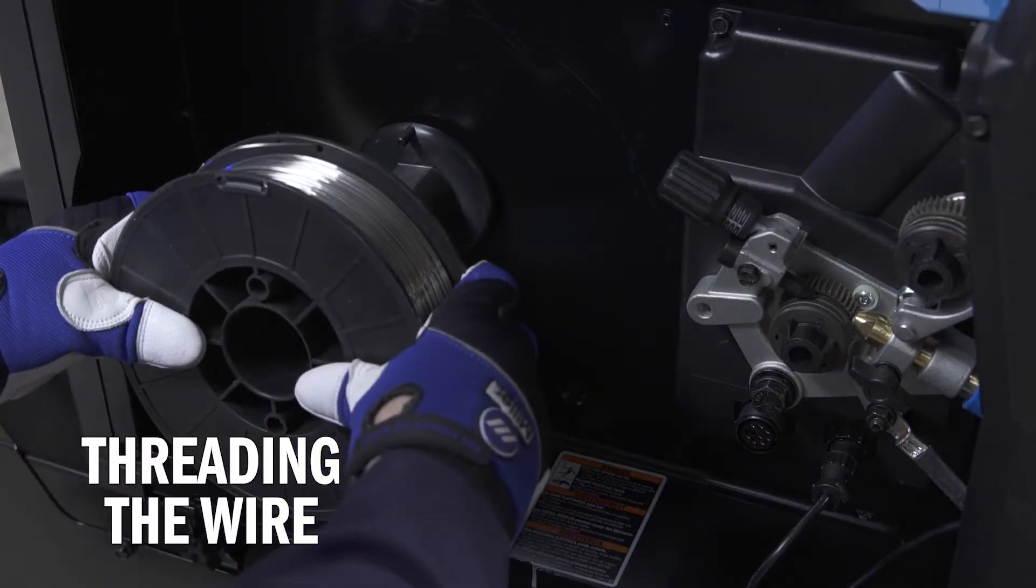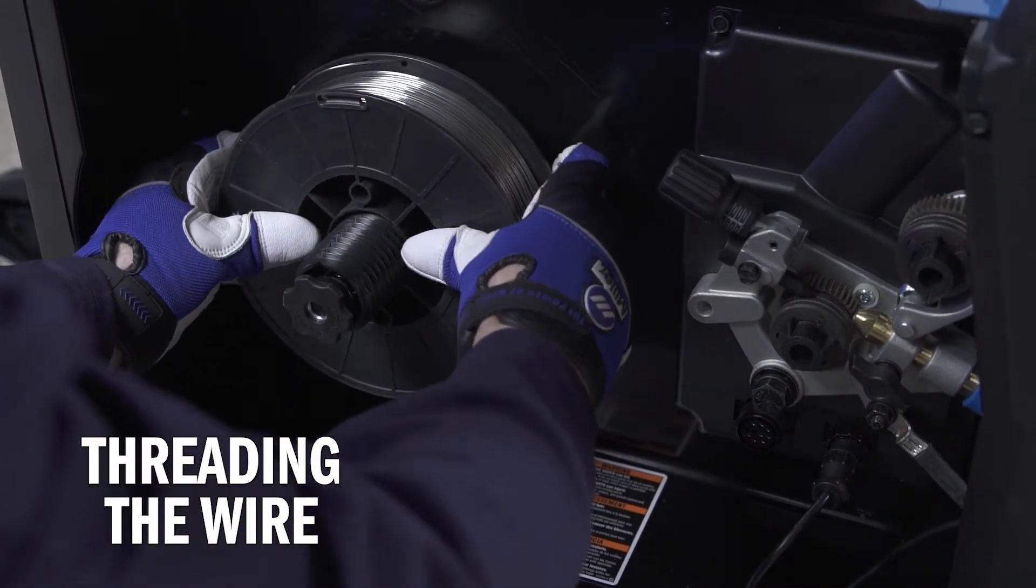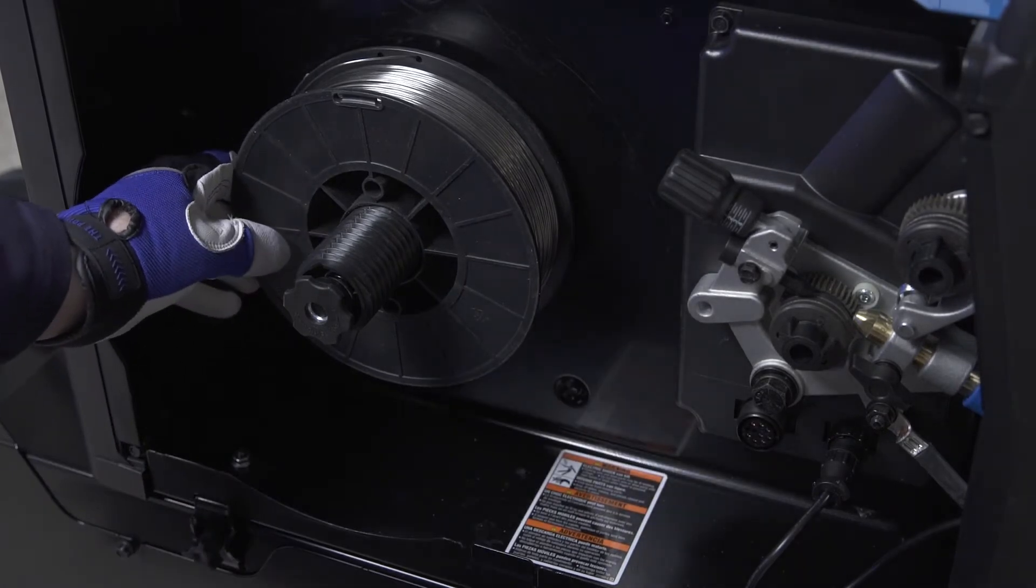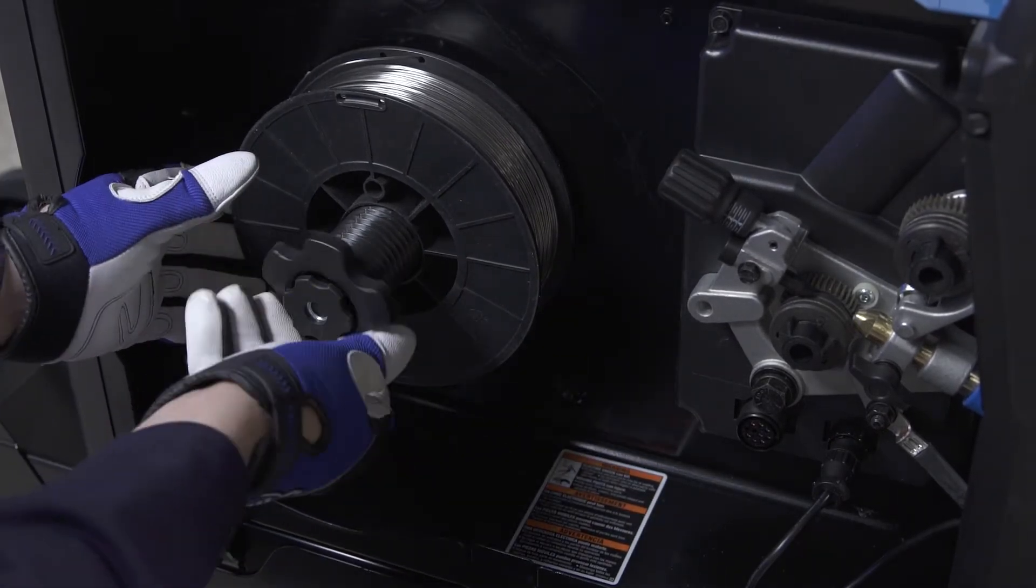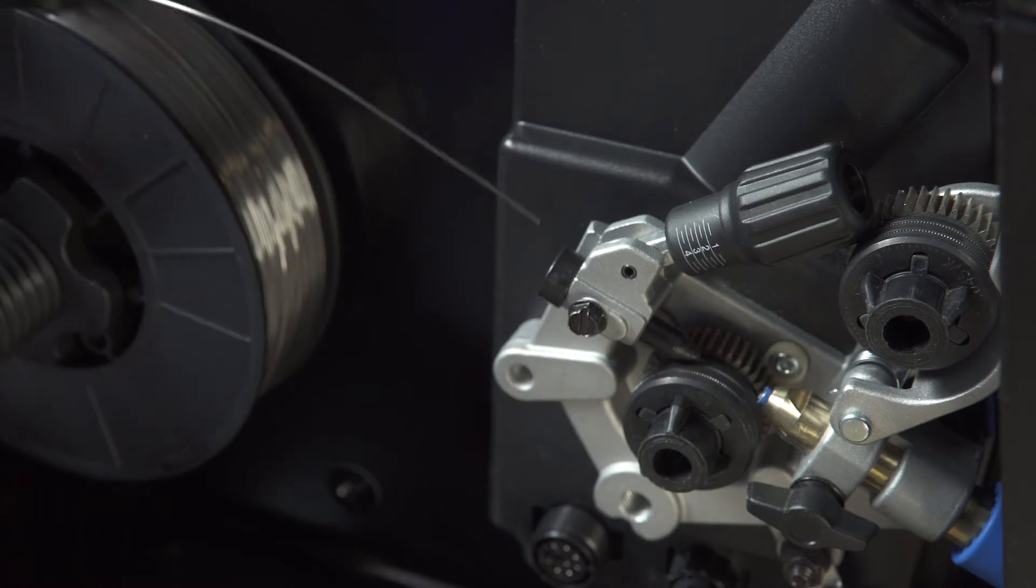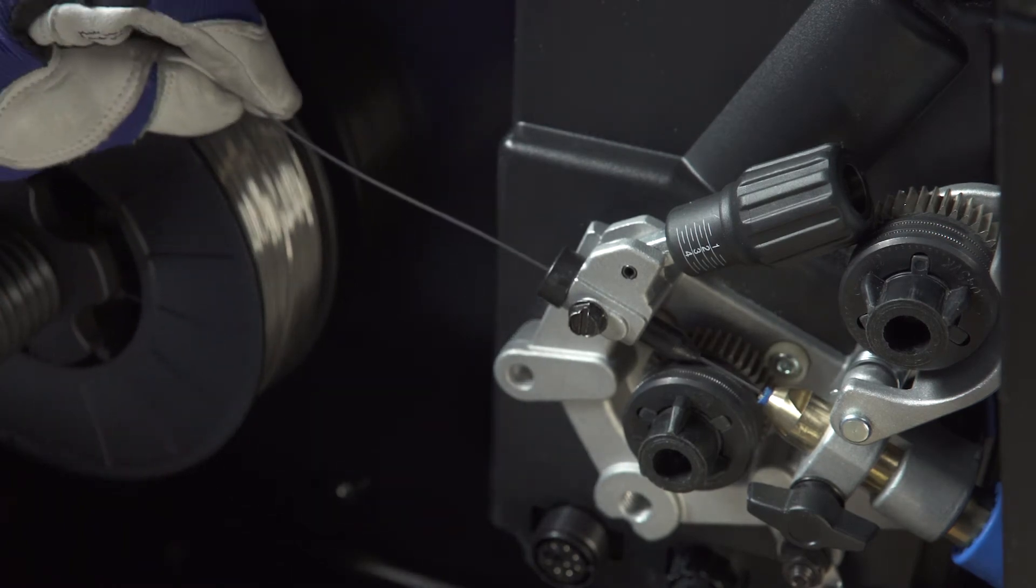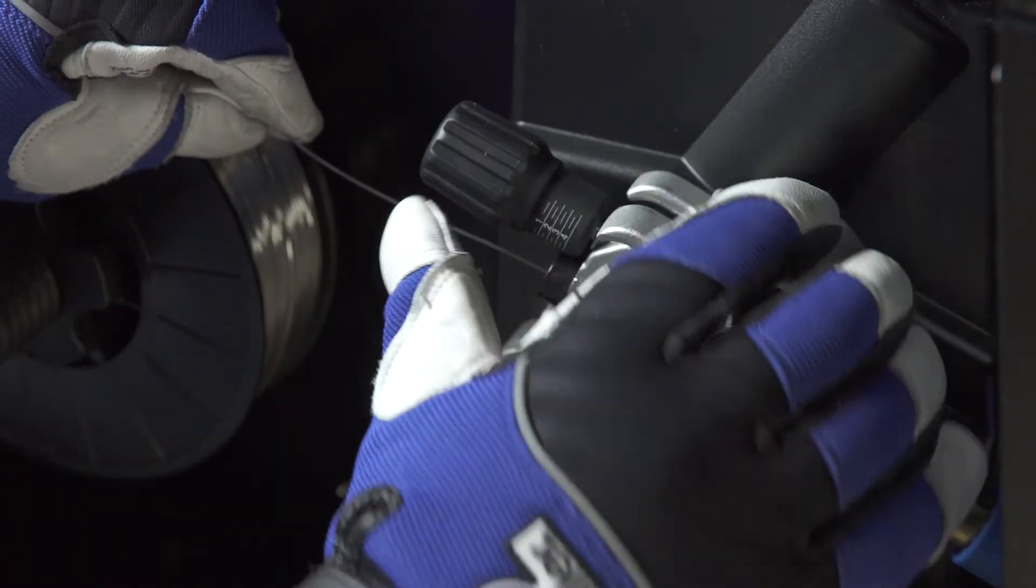Next, install the spool of wire to allow the wire to feed from the top of the spool. Fasten the spool hub nut to secure the wire spool. Pull the wire from the top of the spool and feed it through the inlet guide and close the pressure lever.